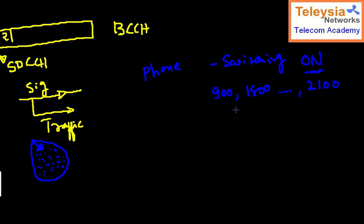Practically speaking, the phone should go to the best available technology. If the phone is 3G capable, it should start scanning 3G first. If 3G is found, it tries to register on the 3G network; if not, it jumps to GSM and checks which band and frequencies are strong. Let's simplify by assuming we are trying to latch onto 900 MHz — so we scan all 124 frequencies in that band.